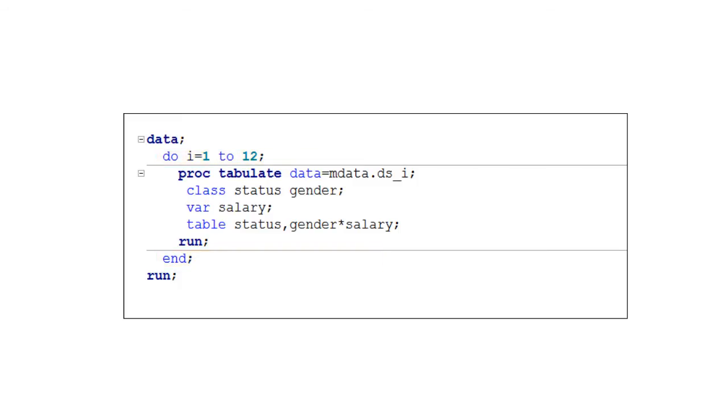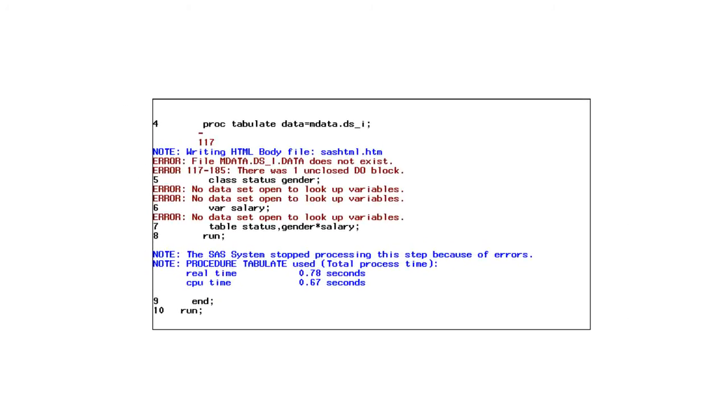There is however, a further problem which relates to the use of the index variable i. The current program attempts to use i to change the name of the data set being processed. Unfortunately, this is not how Proc tabulate will interpret this instruction. Proc tabulate is not aware of the fact that the letter i is actually a variable to be resolved and so each iteration of this do loop will attempt to read in the table DSi. On executing the program, all of the problems we have identified are reported as errors in the log, including a message which states that PROC tabulate cannot find a dataset called DSi.